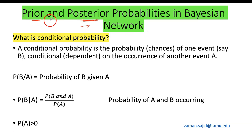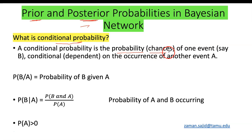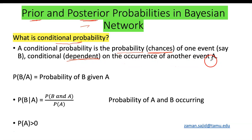Before I jump into the definitions of prior and posterior, you need to understand something called conditional probability. This is a very typical definition that you can find in any literature: conditional probability is the chances of one event, let's say B, conditional on — or dependent on — the occurrence of another event A. It could be any other event, C, D, E; I just took an example of A and B here.